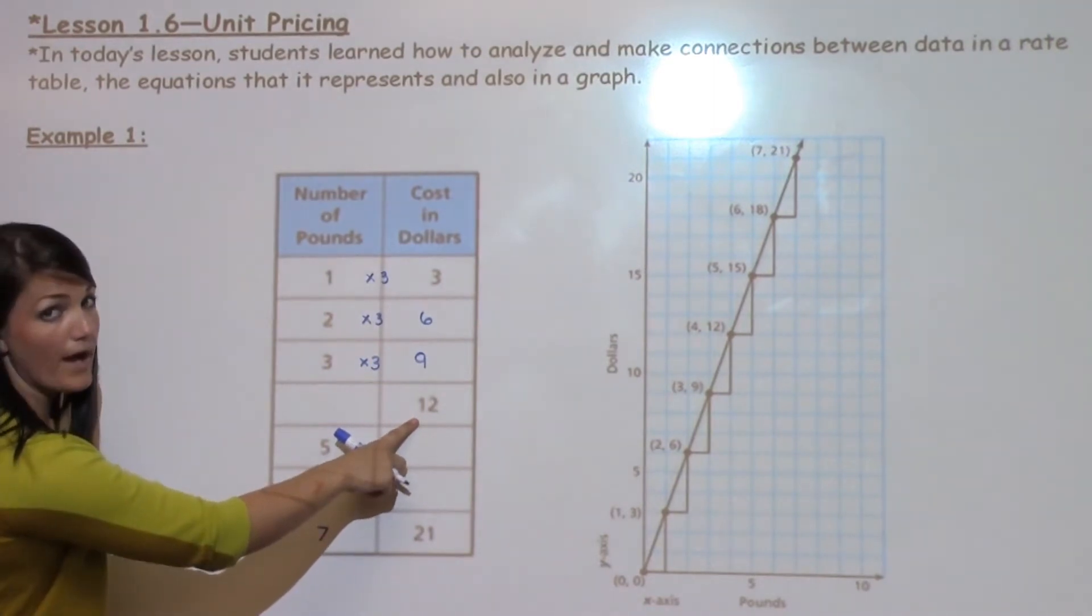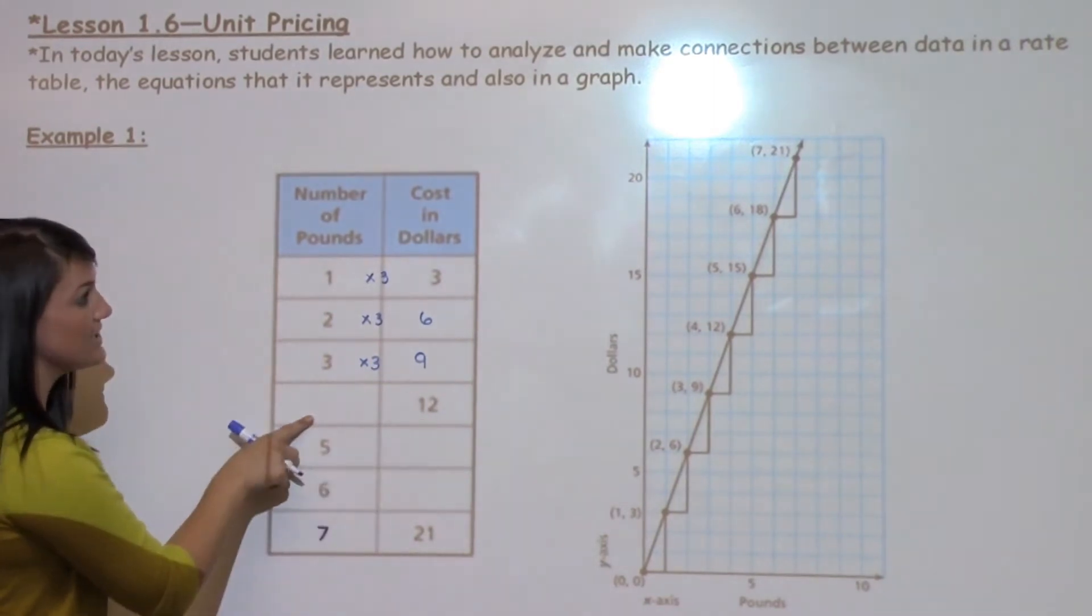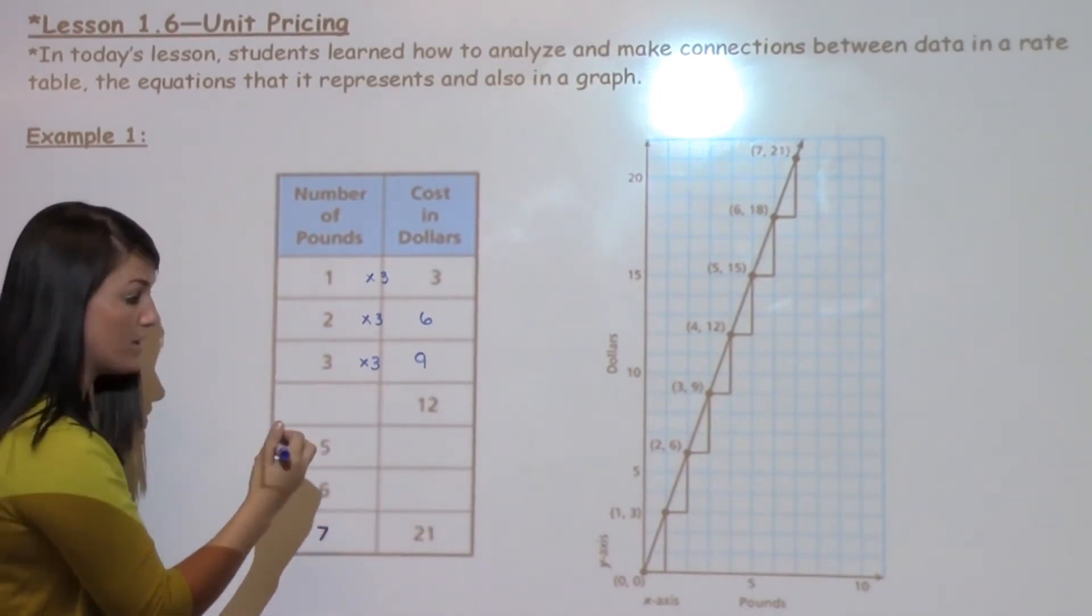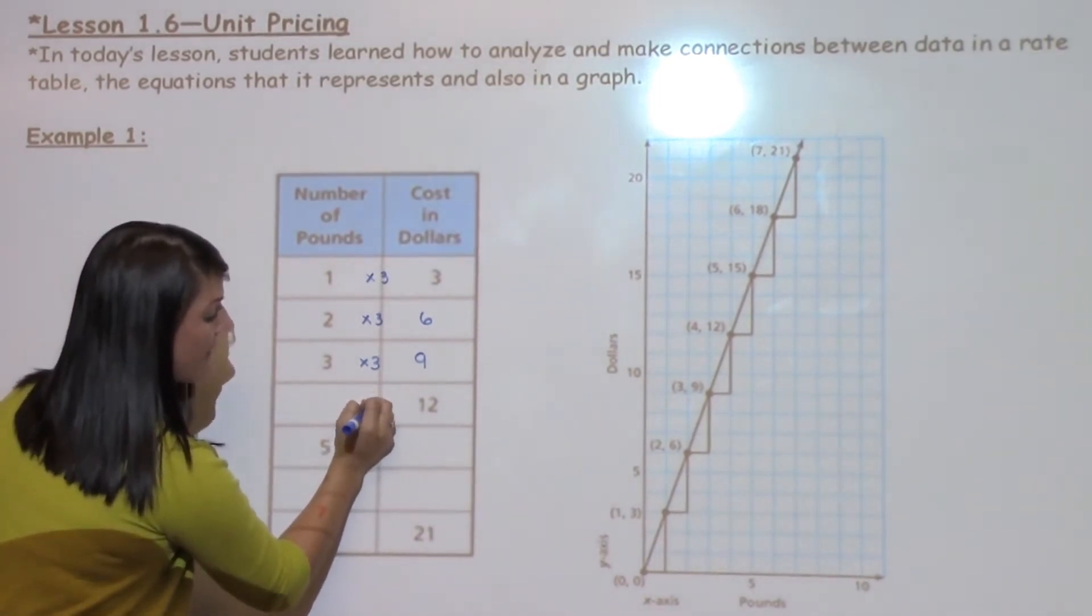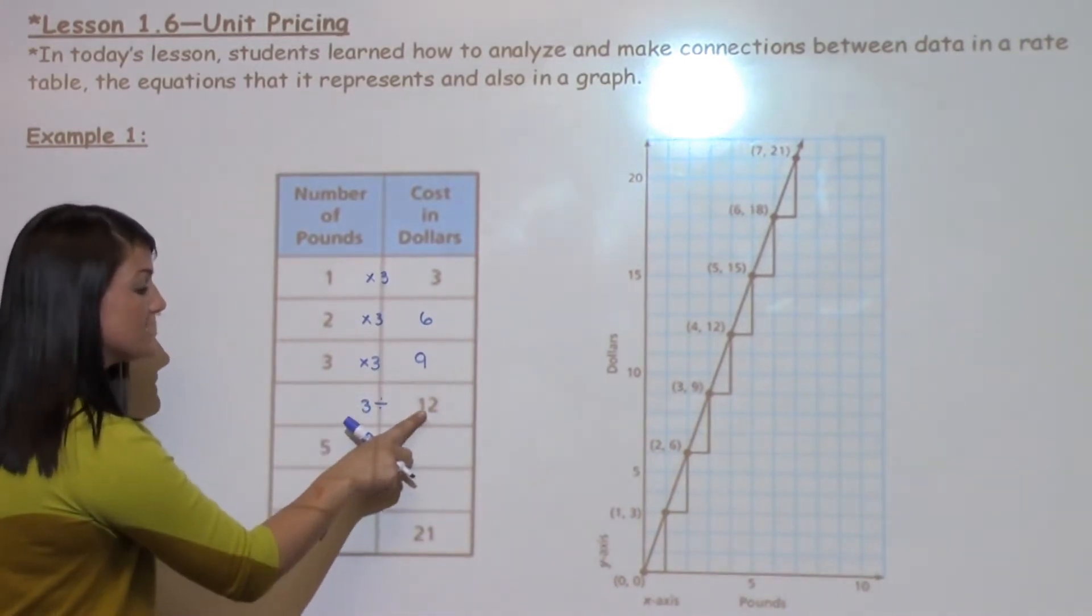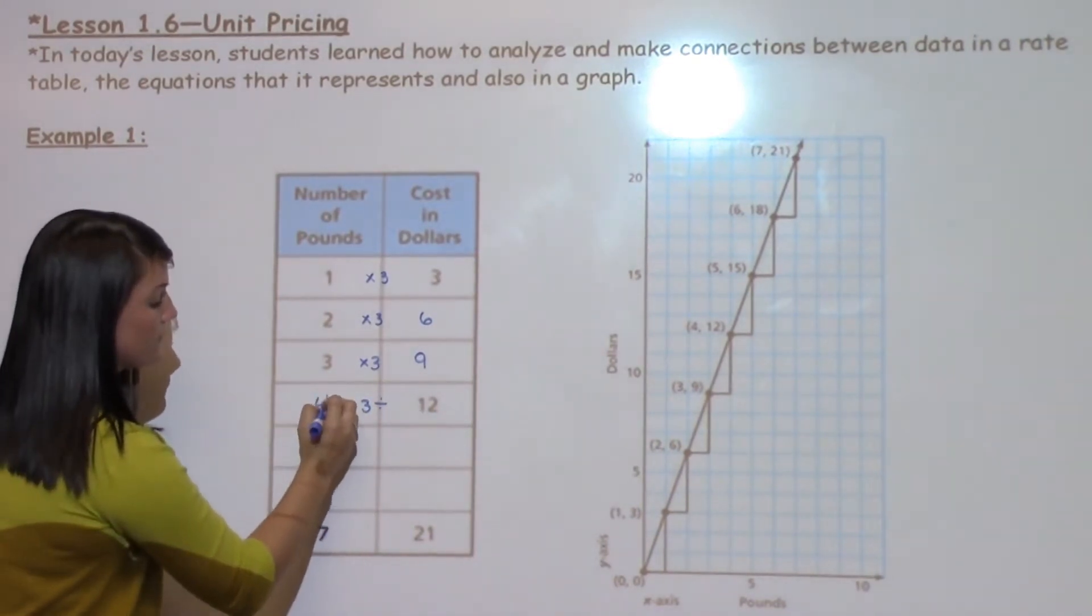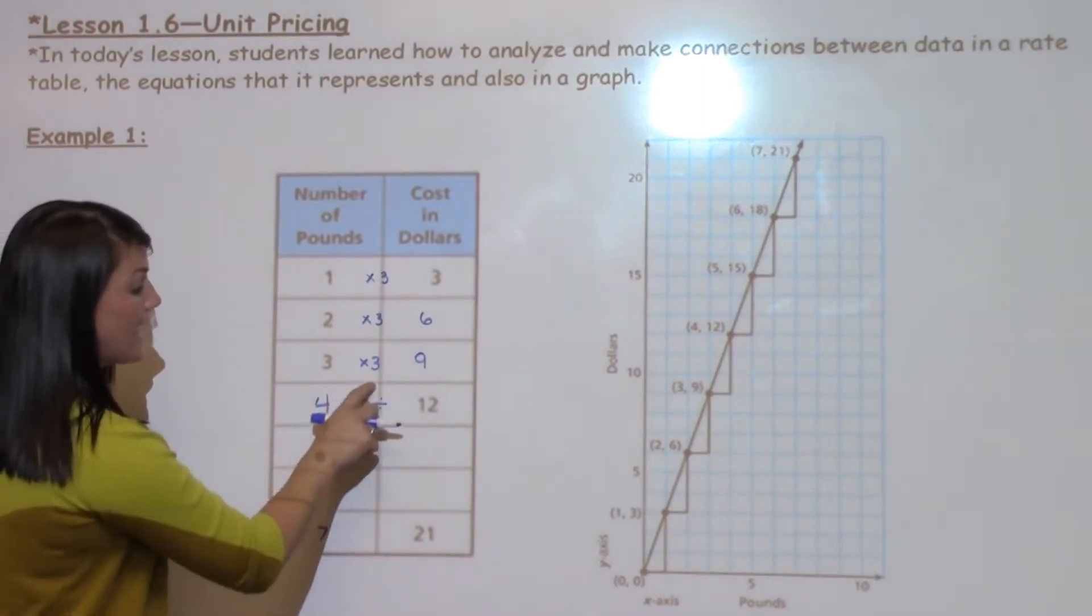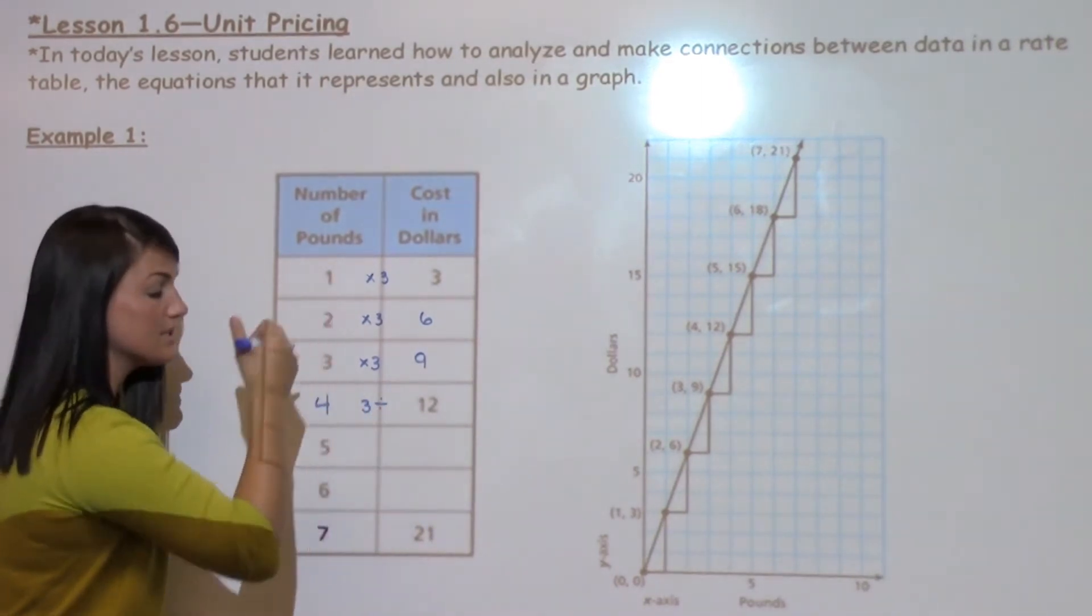Now here I have the 12. I have how many dollars? I don't have the pounds. So instead of times three, I have to do the opposite with my unit rate, and I must divide by three. When I do that, 12 divided by three is four. I can always double check my math and think four times three gives me 12 to double check with multiplication.